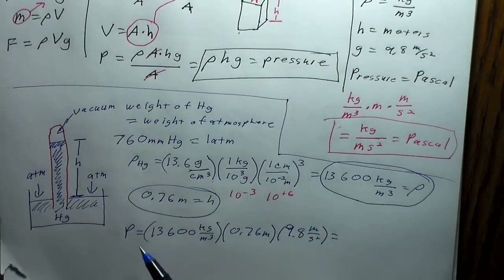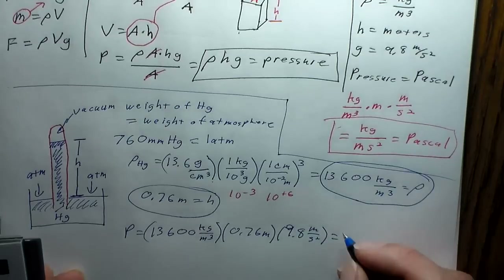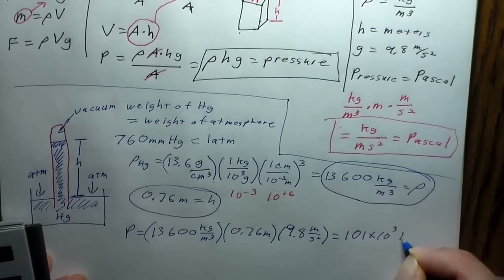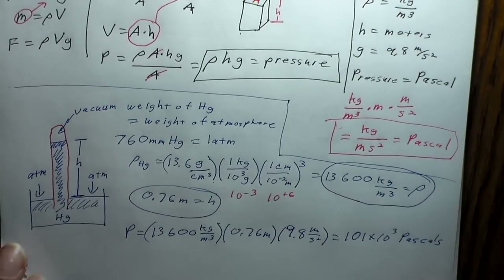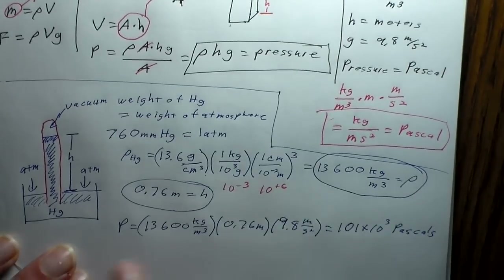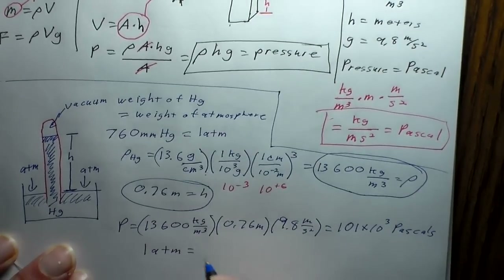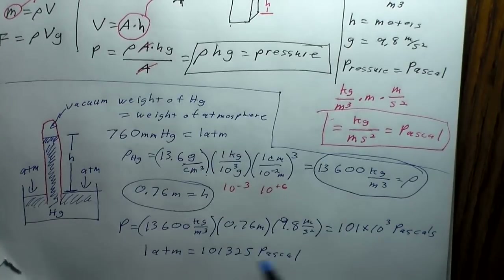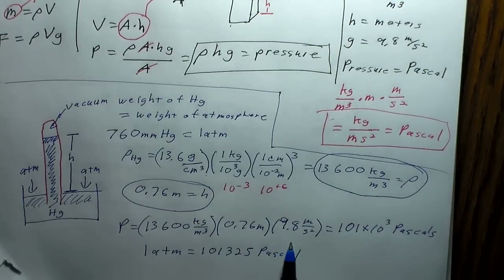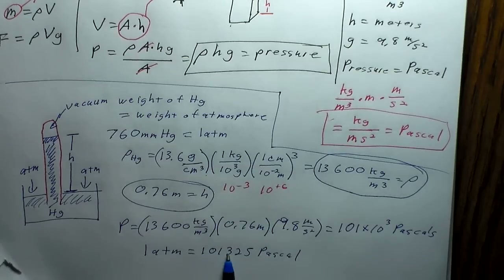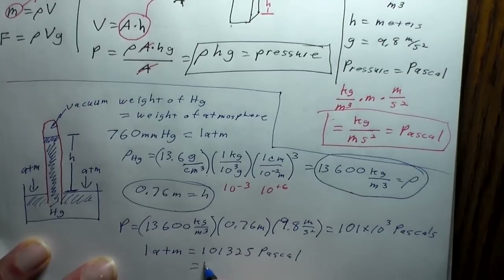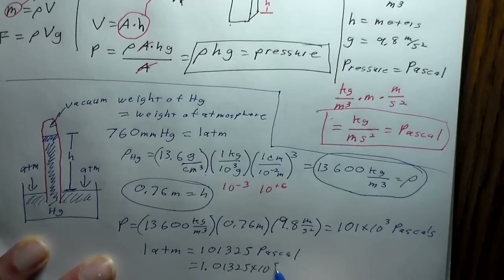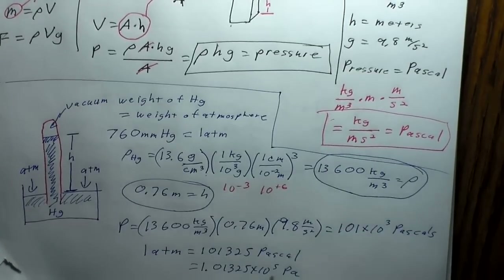This works out to about 101 × 10³ Pascals, to 3 significant figures. The universally accepted value is 1 atmosphere equals 101,325 Pascals — equivalently written as 1.01325 × 10⁵ Pascals. The slight discrepancy is because we didn't carry enough significant figures in the density of mercury and the acceleration of gravity.